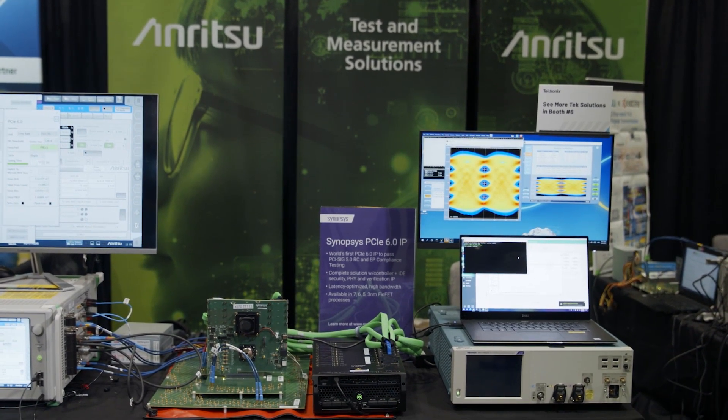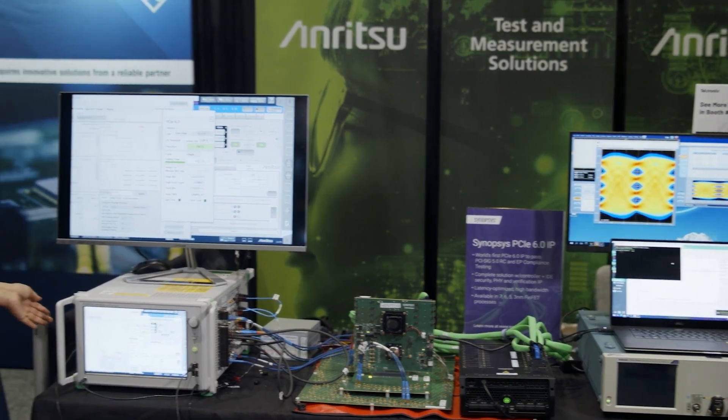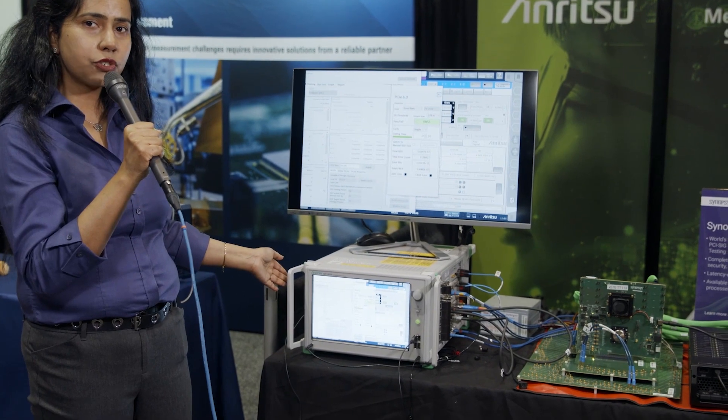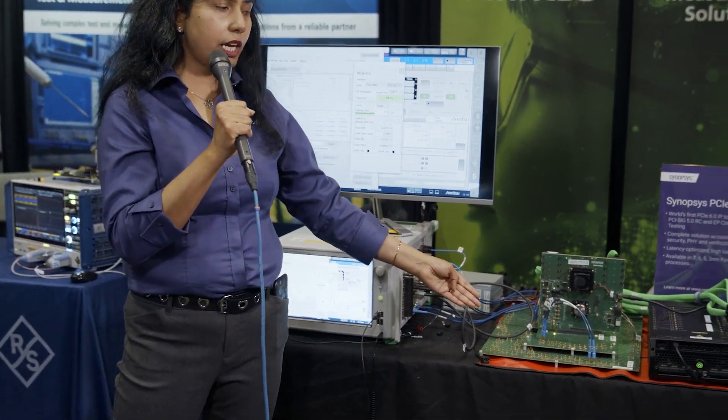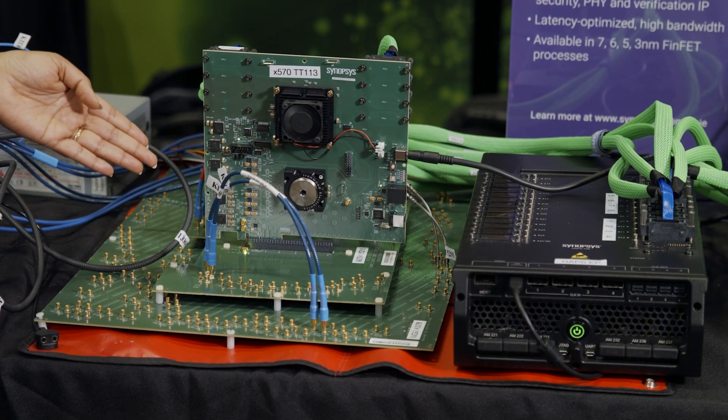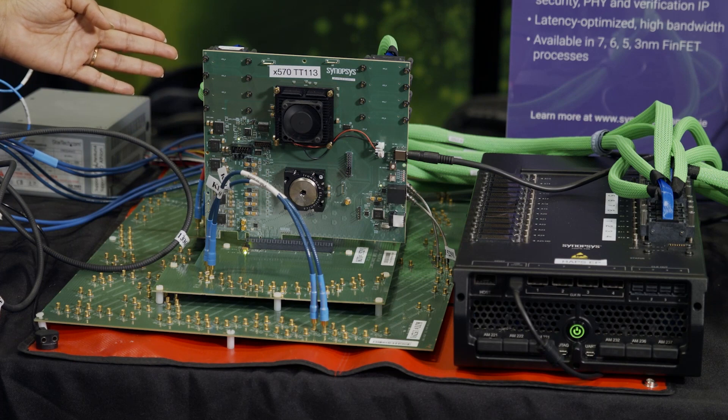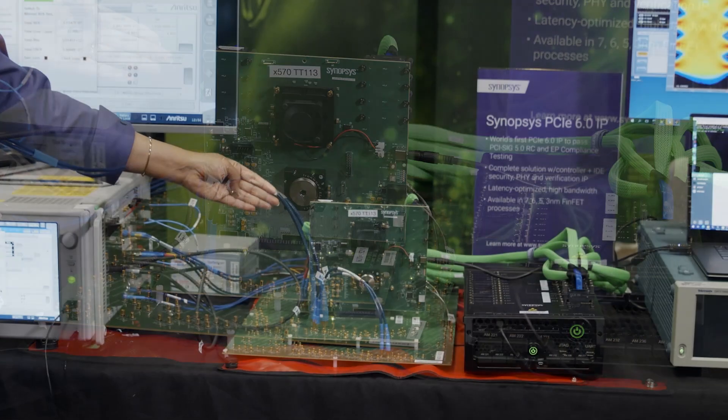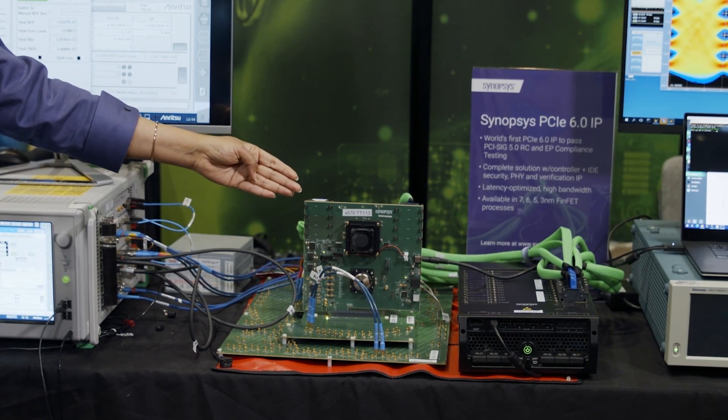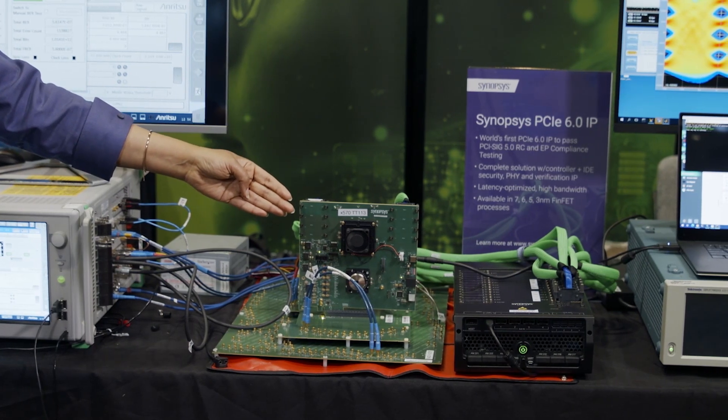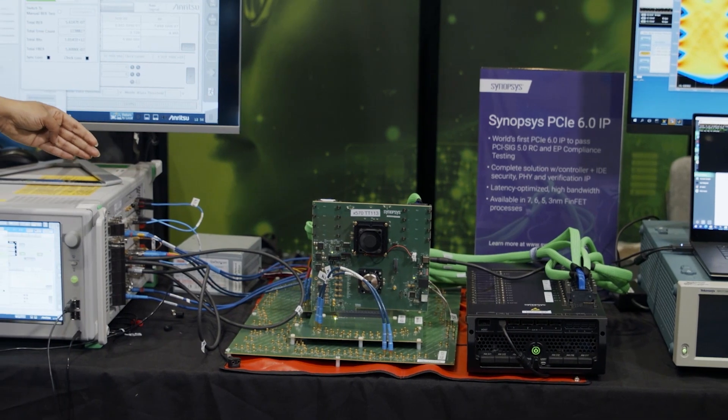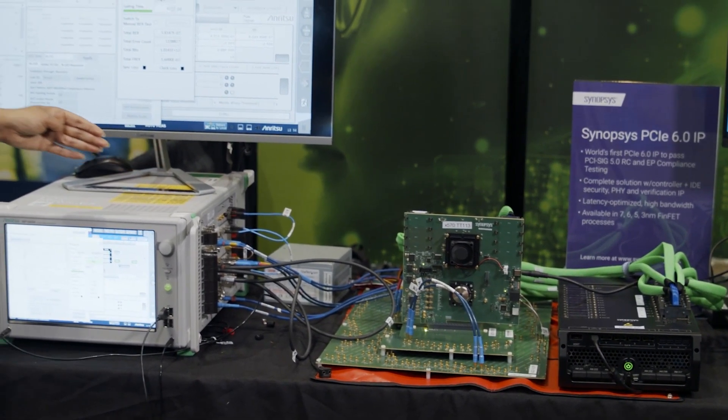Let's focus on the actual demonstration itself. Here the Anritsu BERT is acting as a host and it's sending the stressed eye pattern through this ISI channel. This is the worst case 33 dB and it's going to Synopsys end-to-end solution with PHY and controller. The receiver is equalizing the stressed pattern and it's looping back through the controller and PCS, coming back to the PHY transmitter, and the transmitter is getting the signal back to the BERT.